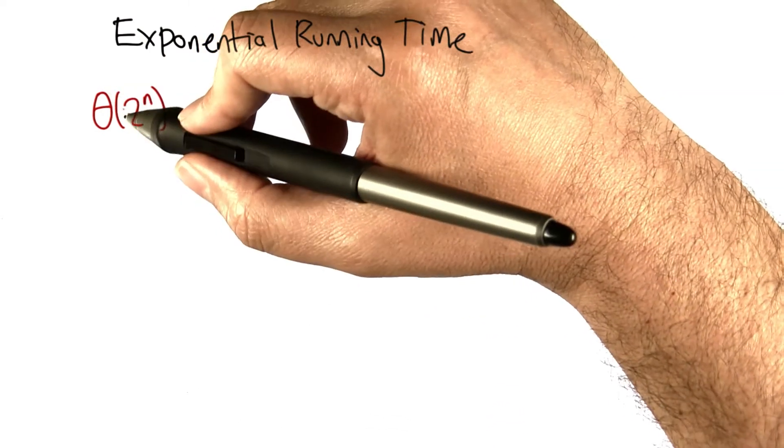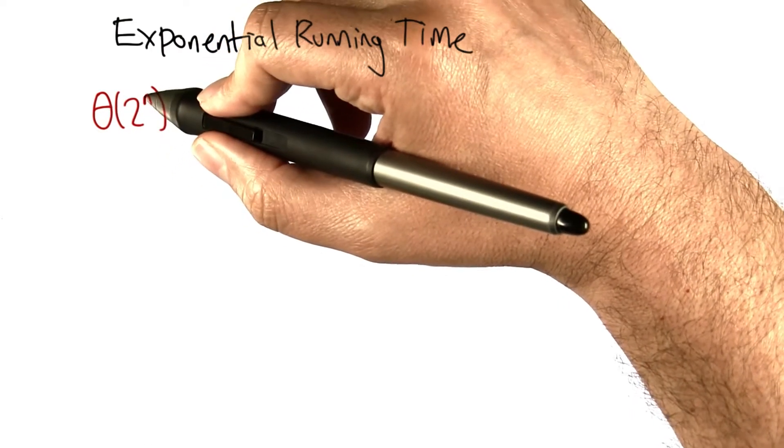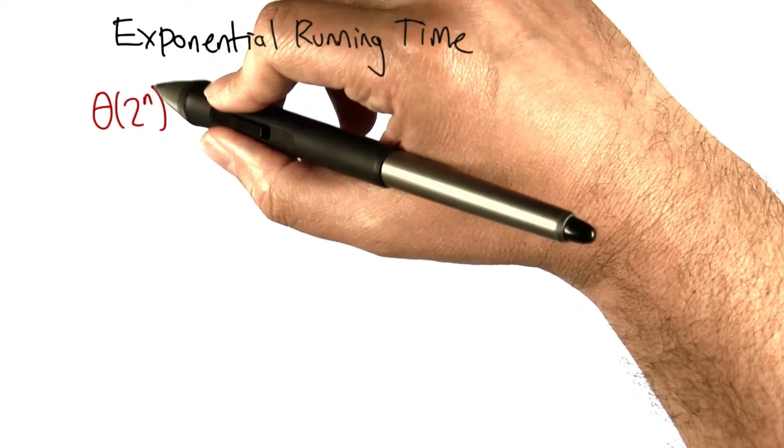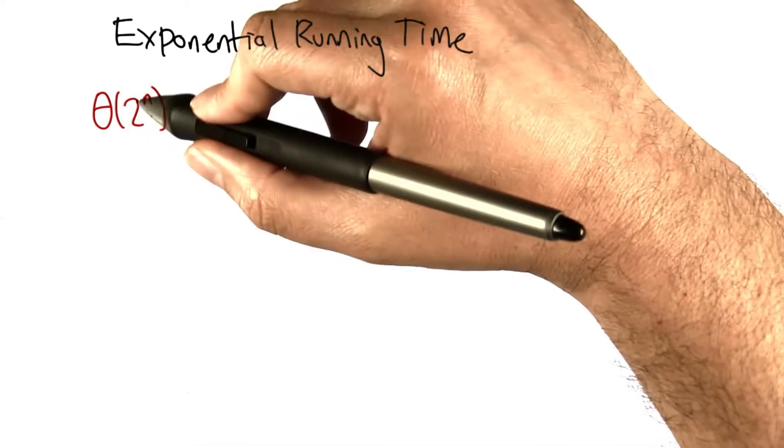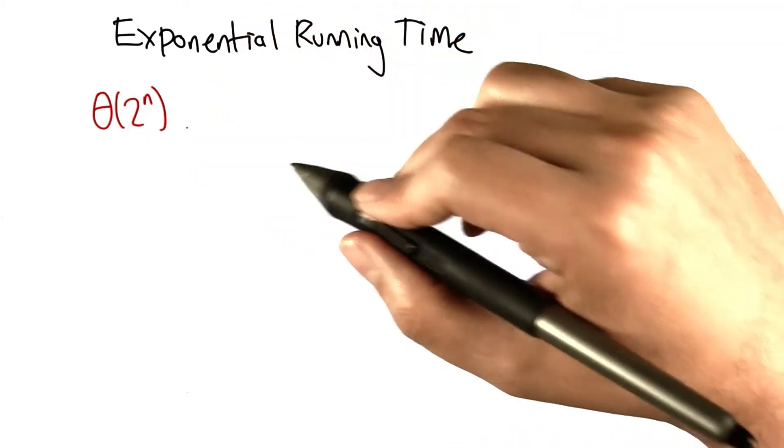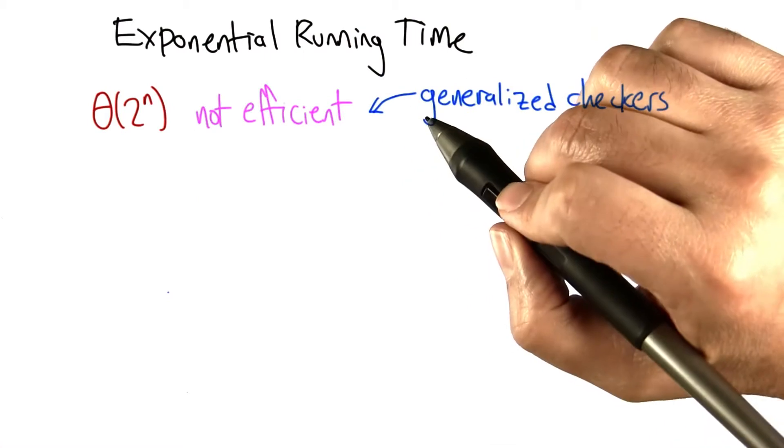For example, an algorithm might have a bound of big theta of 2 to the n. So as n gets larger, this is getting larger very quickly. This is considered not efficient.